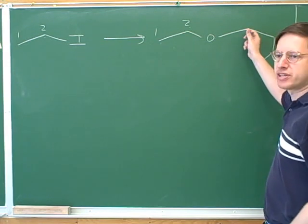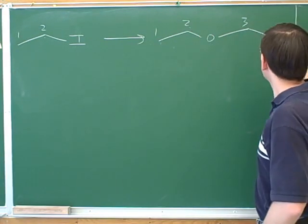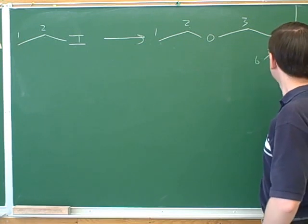That means we have to give some new numbers to these carbons, because they didn't appear in the starting material like three, four, five, six, and seven.